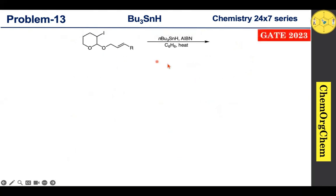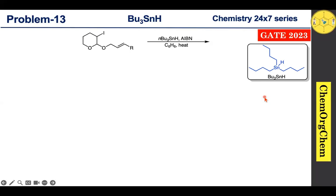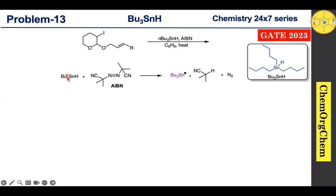Before moving to the solution, we have already discussed tributyltin hydride — its reagent preparation, properties, and applications in three parts. If anyone missed that, you can find the link in the description box. Now, tributyltin hydride and AIBN react together to produce a tributyltin radical.